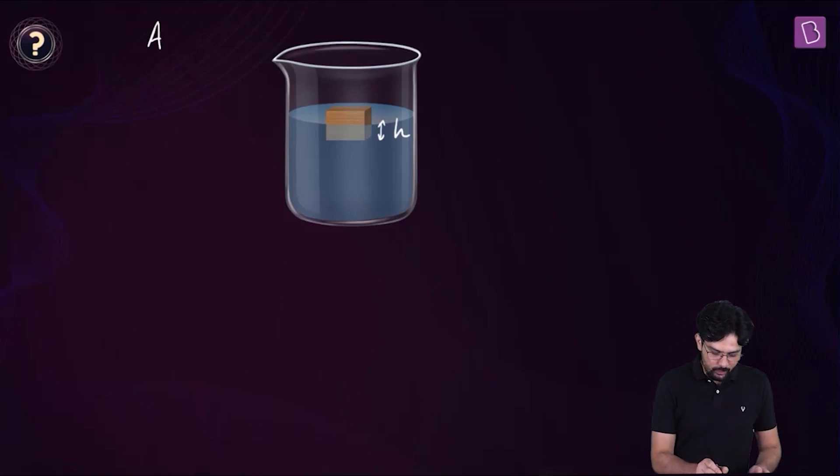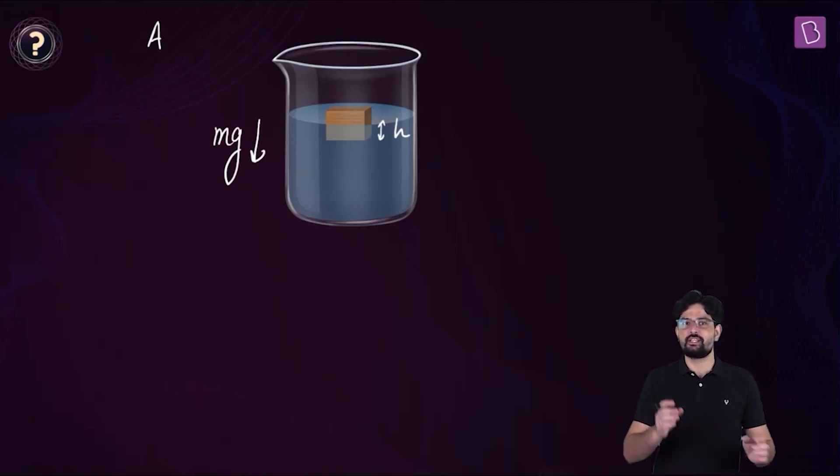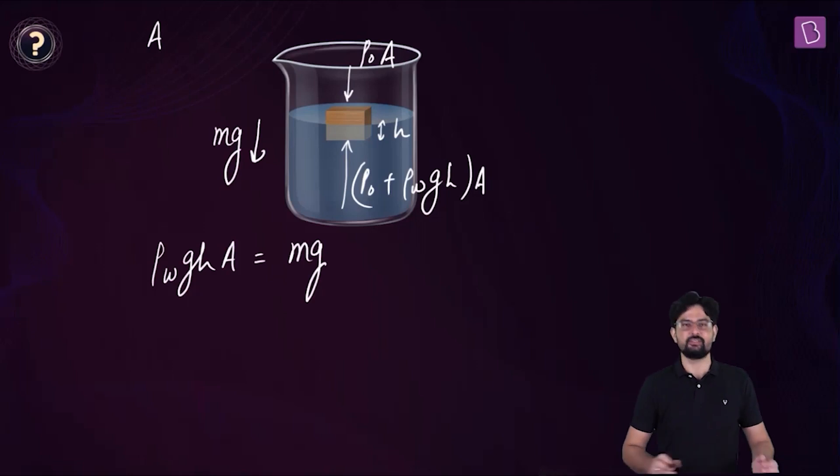Now who is balancing the force of gravity, mg acting on this object downwards? The force due to the difference in pressure is going to balance this force for the equilibrium of this object. So, the force acting on the top surface of this object is the atmospheric pressure P0 into area of cross section A and the force that is acting on this object from below is P0 plus ρ_water g h into A. And the difference in pressure which is ρ_w g h into the area is equal to M into g.